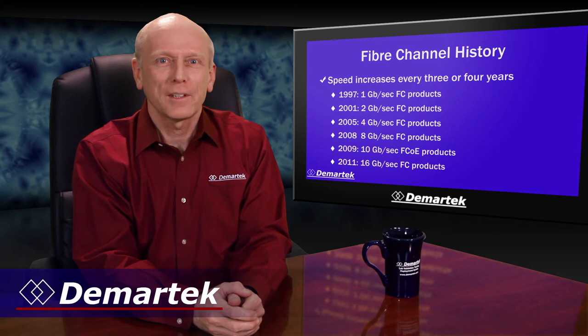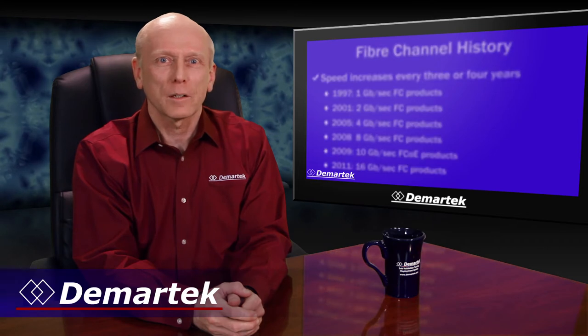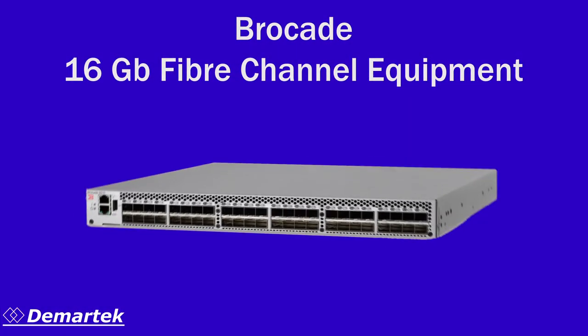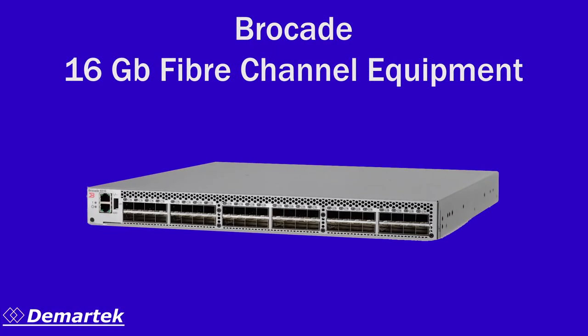Let's take a look at two 16 gig fiber channel components from Brocade: the Brocade 6510 switch and the Brocade 1860 fabric adapter. The Brocade 6510 switch supports 2, 4, 8, 10, and 16 gigabit speeds. It's available in 24, 36, and 48 port configurations and is designed in a one rack unit package.